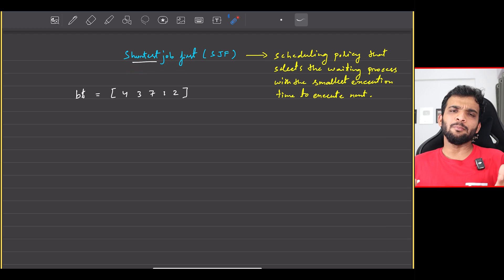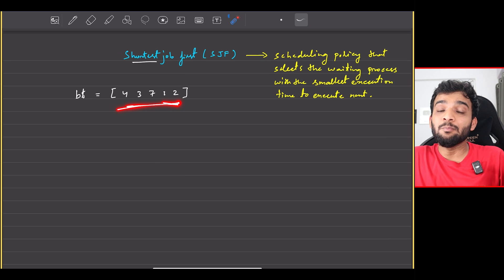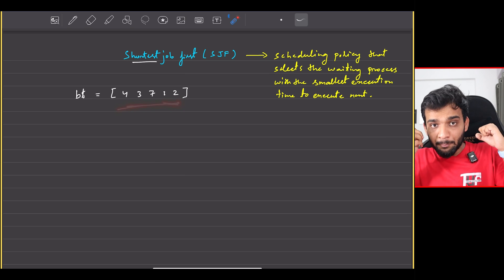Now, what is the problem stating? The problem is stating that you will be given n processes and every process execution time is known to you.